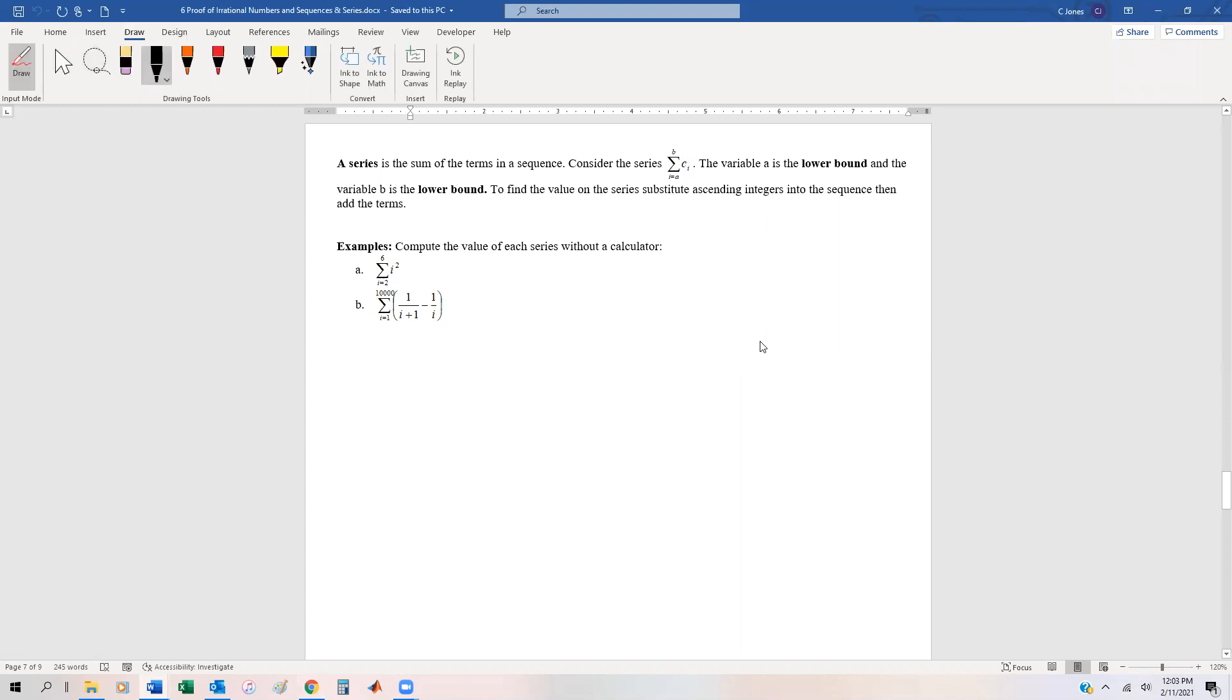A series is essentially the sum of the terms in a sequence. If we have a series of this form where i equals a to b, the variable a is the lower bound, b is the upper bound, and then we have the sequence c sub i. That means to add up all of the numbers starting with a, ending with b, and if we evaluate the sequence at those values, all integers in between, to add those up.